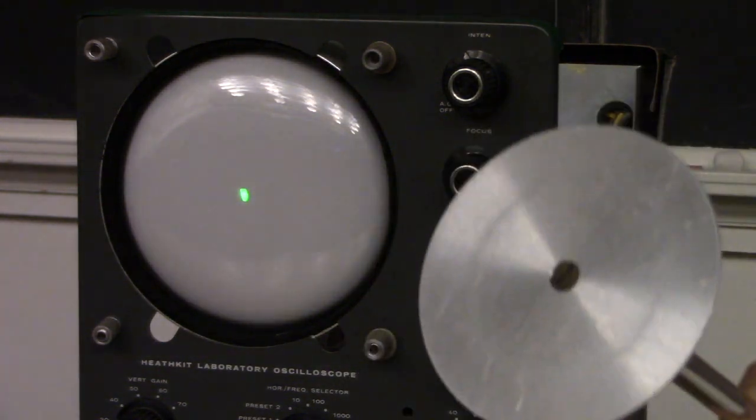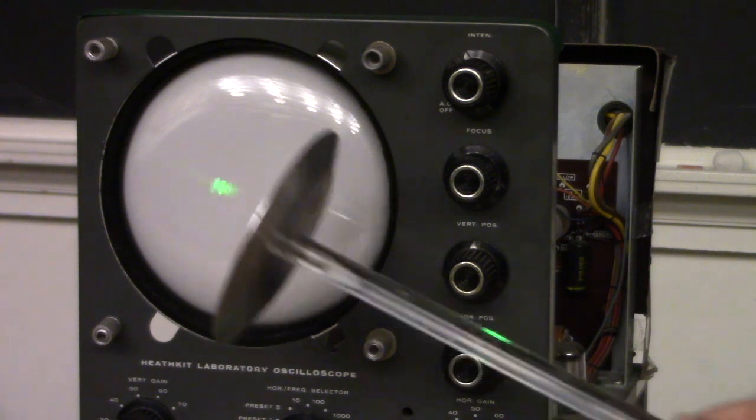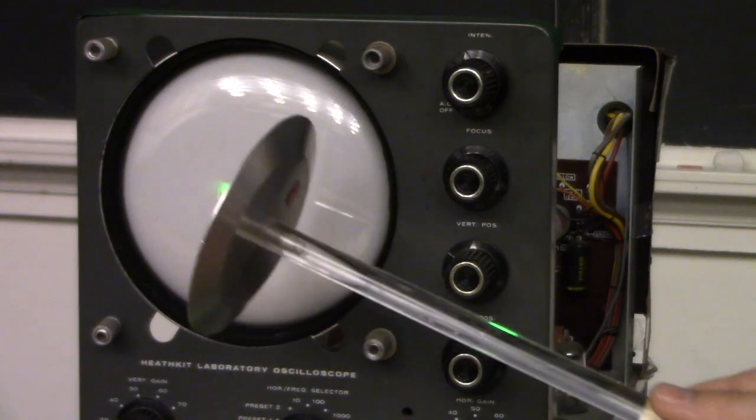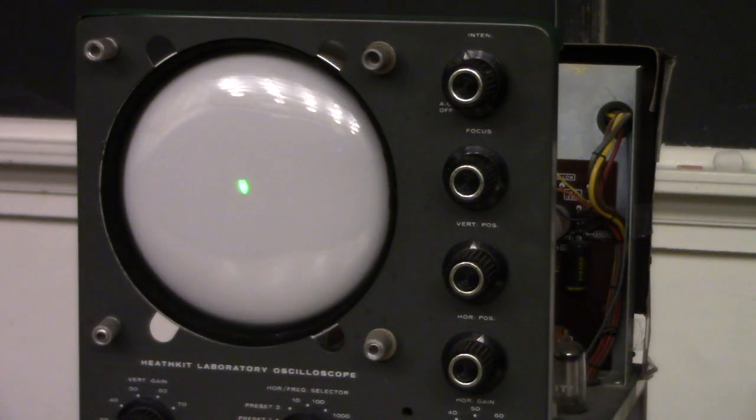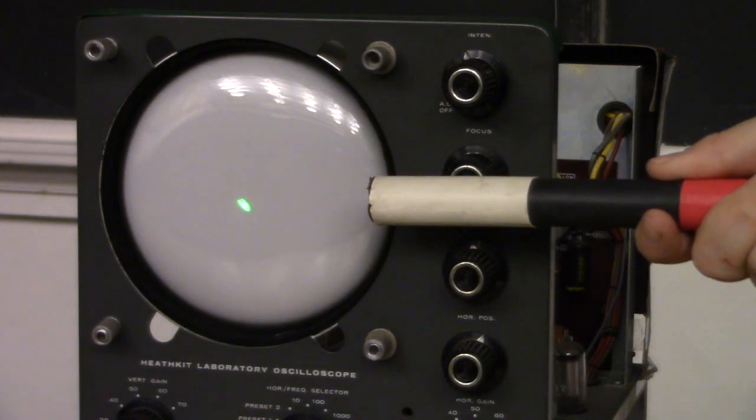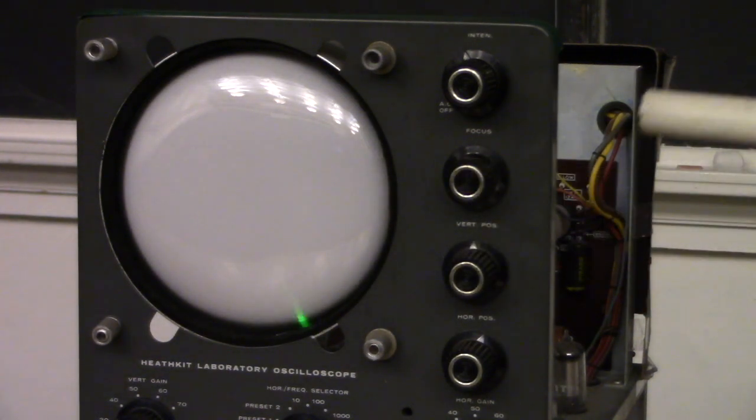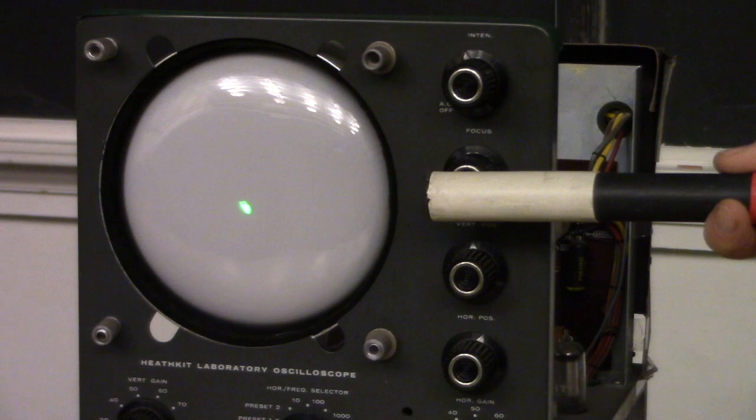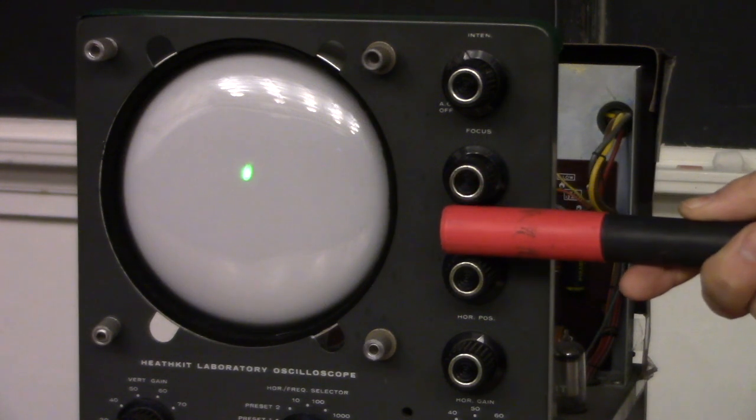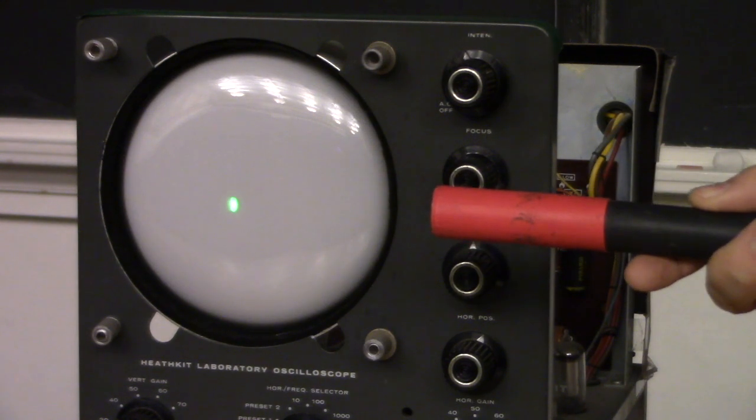With a charged electrophores, I can deflect the beam directly using the electric field generated by the disc. I can also deflect it using a magnet. And of course, the direction that it's deflected depends on which pole of the magnet I'm using.